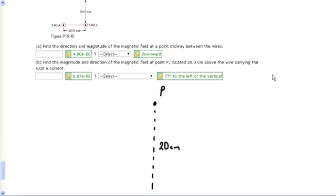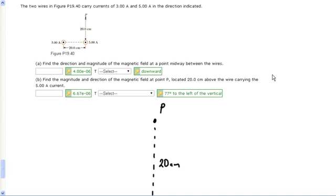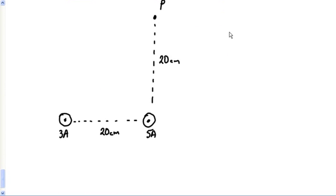Once more into the breach, my friends. Here we are back for another problem with magnetic fields. I love all these questions about wires - they're always using the same equation over and over. All I'm looking at in this problem is I'm looking for B at this point P.